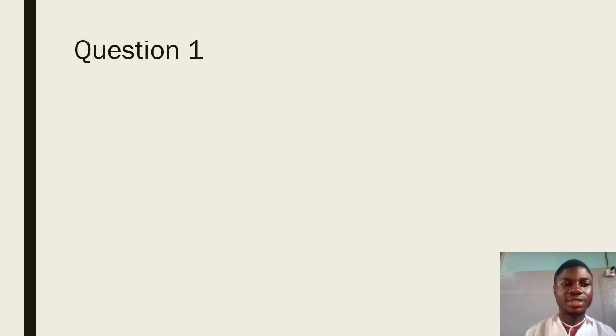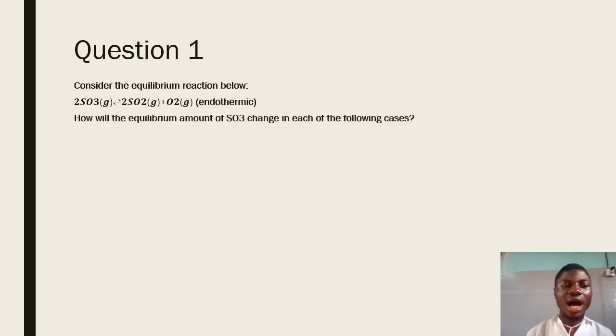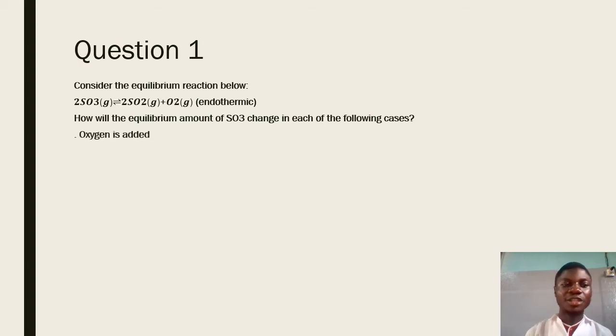Question 1 says: consider the equilibrium reaction below. We have been given an equilibrium reaction whereby we have the decomposition or breakdown of sulfur trioxide to give sulfur dioxide plus oxygen. This is an endothermic reaction — a reaction whereby heat is absorbed from the surroundings by the system. We have been asked how will the equilibrium amount of sulfur trioxide change in each of the following cases?